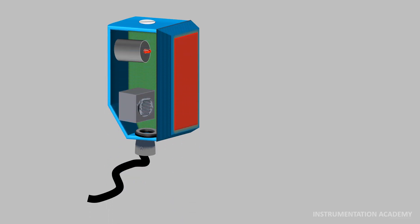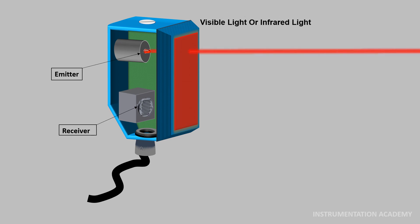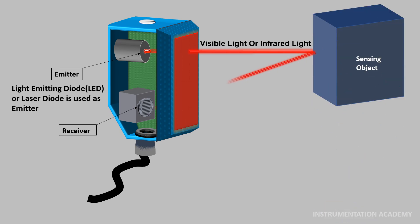A photoelectric sensor basically consists of an emitter for emitting light and a receiver for receiving light. The emitter converts the electrical signal to light energy and emits a produced light as a beam of either visible light or infrared light. Usually, LED or laser diode is used as emitter. When emitted light is interrupted or reflected by the sensing object, it changes the amount of light that arrives at the receiver.